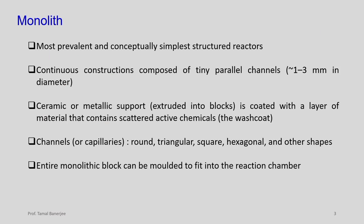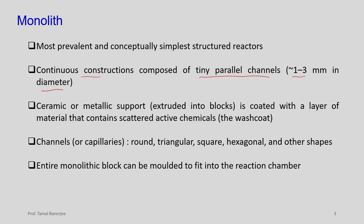Monoliths are mostly prevalent and conceptually the simplest structured reactors. These are continuous constructions composed of tiny parallel channels around 1 to 3 millimeters in diameter. They may be of different shapes. This avoids the tortuous path of catalyst particles, and the advantage is there will be a lower pressure drop. The support of these monoliths are ceramic or metallic supports, extruded into blocks and then coated with a layer of material.